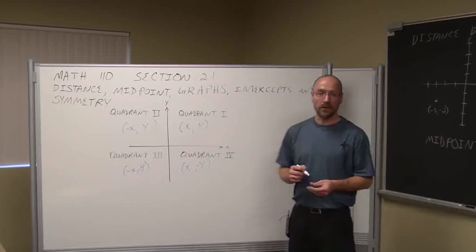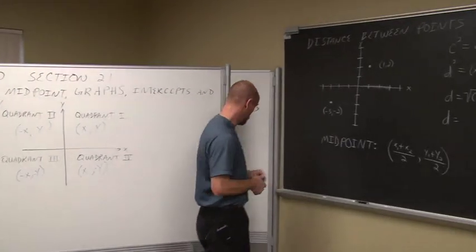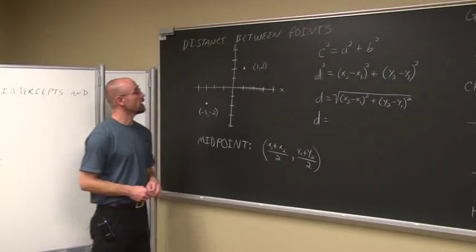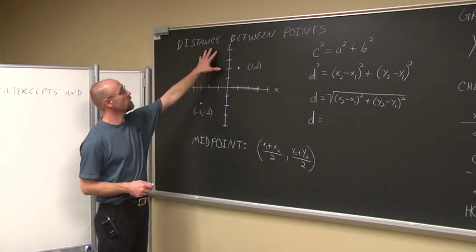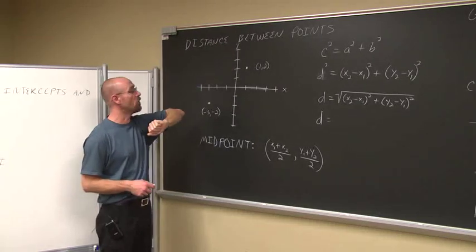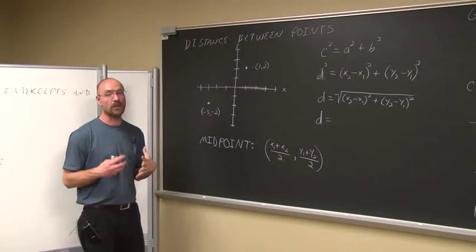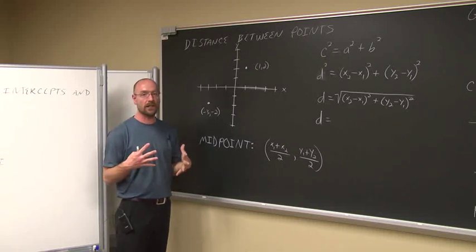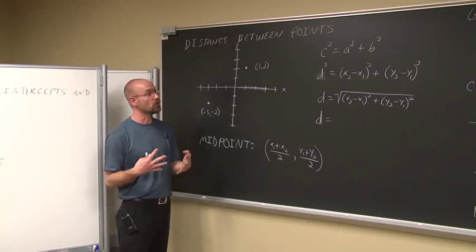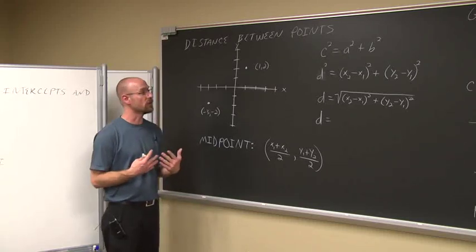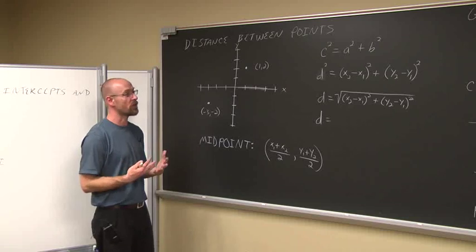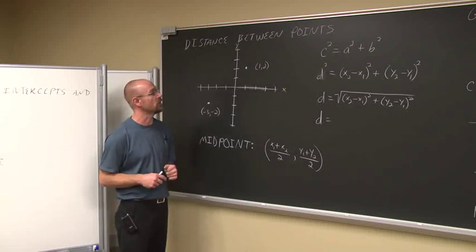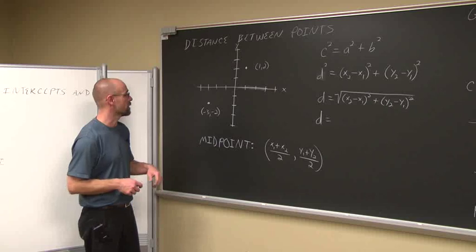Next we're going to look at distance. If we want to find the distance between two points, we can use the distance formula. The distance formula isn't really anything new — it is just a variation of the Pythagorean theorem. At some point in your math career, you should have seen or come across the Pythagorean theorem.